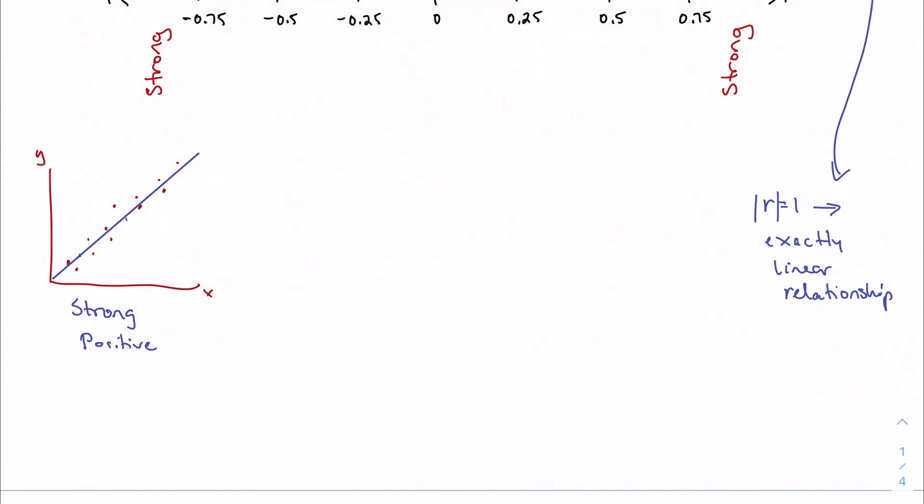If I'm between 0.75 and 0.5, then we're going to call this moderate correlation. That's to say it's going to pretty closely fit a line, but maybe not as closely as we would have liked.